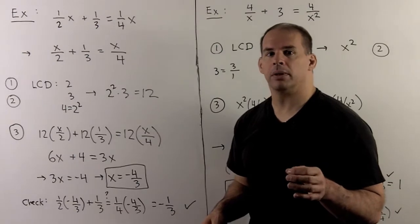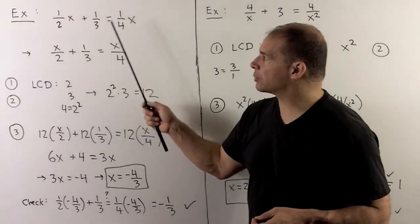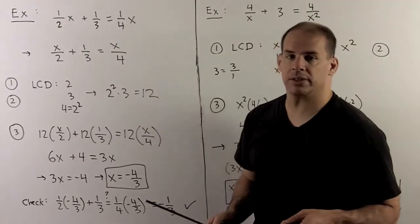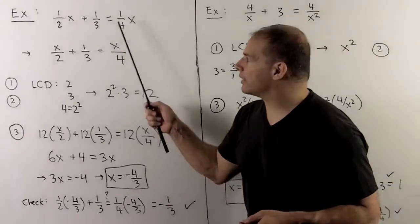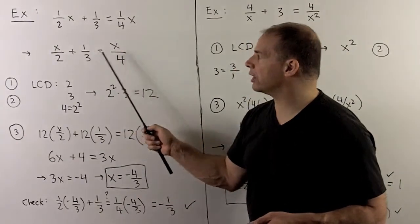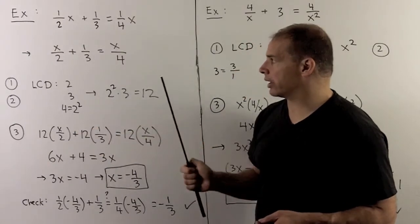First example: start small, work our way up. I have a half x plus a third equal to one fourth x. Here, I want to make these look more like rational expressions, so I'll rewrite this as x over 2 plus a third equal to x over 4. Now it's clear what each denominator is.